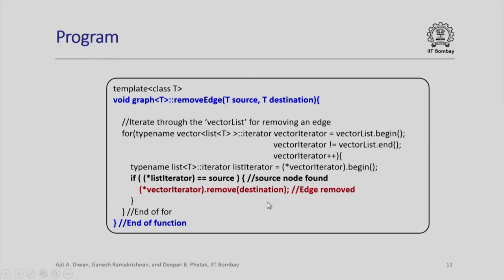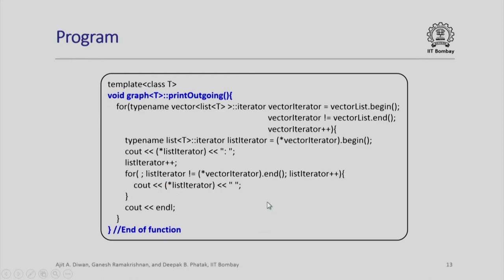We have now seen adding and removing edges and adding nodes. We also need functions to print outgoing and incoming edges. The print outgoing edges function is written using the same iterator: for each element of the vector list, we set the list iterator to begin of the vector iterator and output what the list iterator points to, incrementing by one. Within each list there could be multiple edges, so all edges are covered. As long as the list iterator is not at the end, we keep outputting the next element, traversing all edges which are outgoing and printing them.